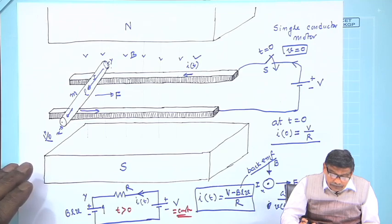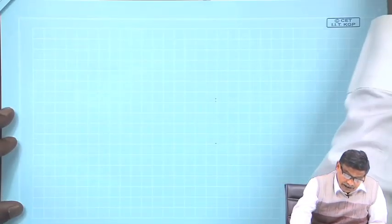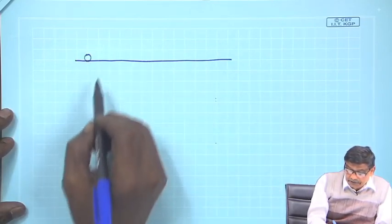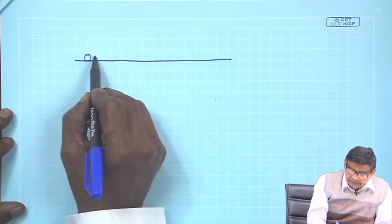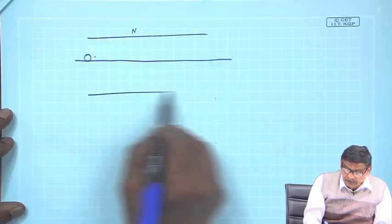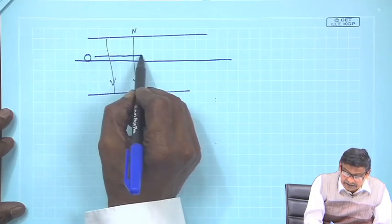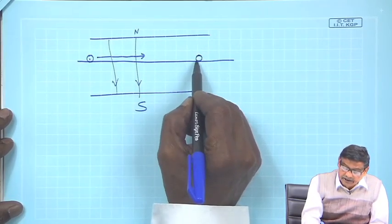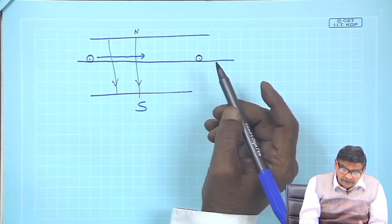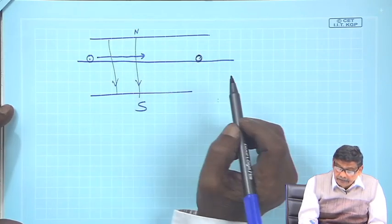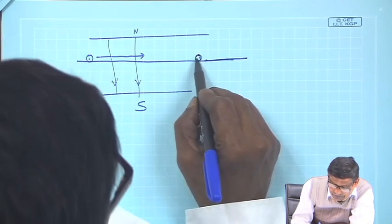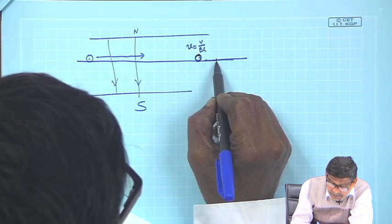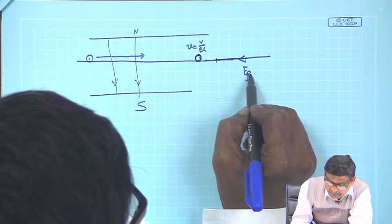Let me explain this with a diagram. Suppose this is the track and this is the conductor. Above is the north pole and on this side is the south pole, so the lines of force are like this. The conductor was accelerating after you closed a switch. Then it reaches a final velocity V/BL, and the current is 0 after sufficiently long time. Now suppose in the track, after it has attained constant velocity V/BL, there is a friction present on this portion of the track.